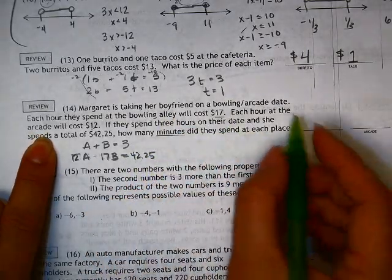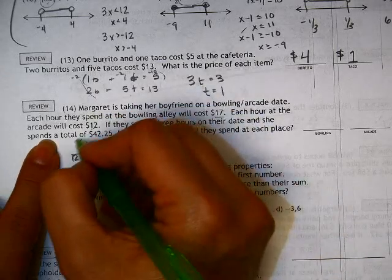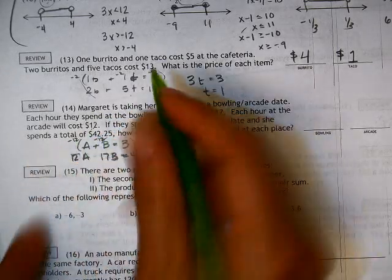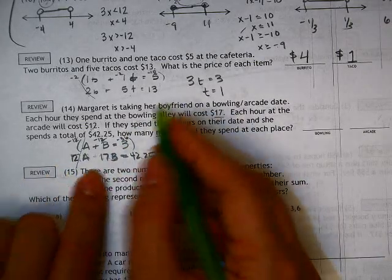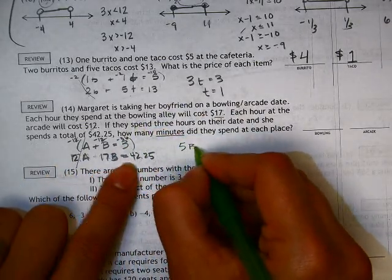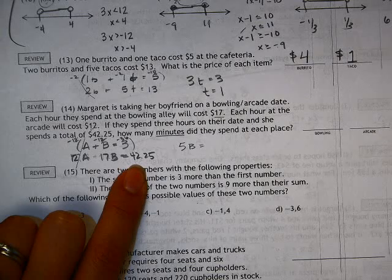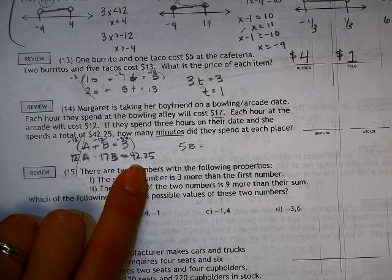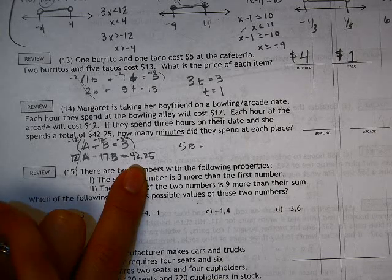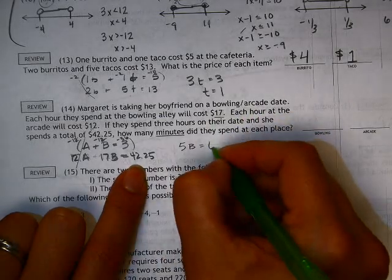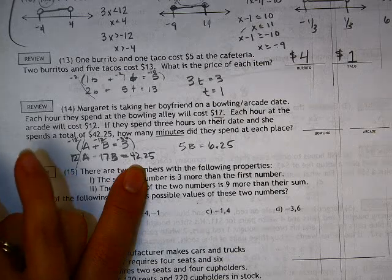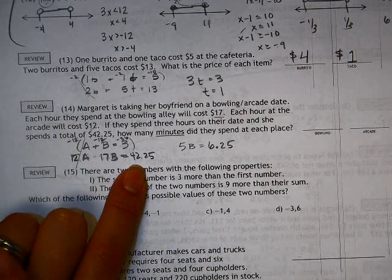How many minutes at each? So we need to multiply 3 by a negative 12. And what is that? Negative 36. So those cancel. You're left with 5B is equal to $42.25 minus 36. So $6.25. And so we divide that by 5.